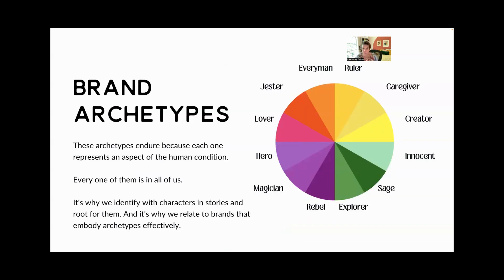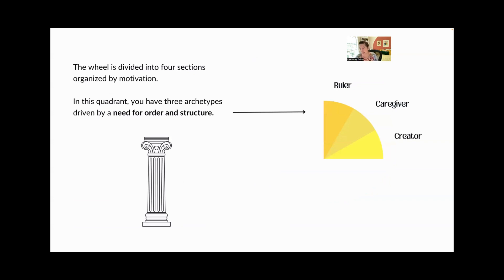These archetypes endure because each one represents an aspect of the human condition. They're all very universal — every one of them is in all of us. It's why we identify with characters in stories and root for them, and it's why we relate to brands that embody these archetypes effectively. It taps into an unconscious drive that we have. The wheel is divided into four sections organized by motivation. In this quadrant you have three archetypes driven by a need for order and structure.